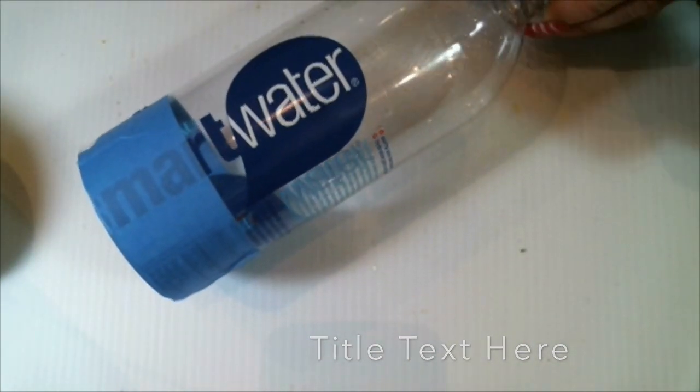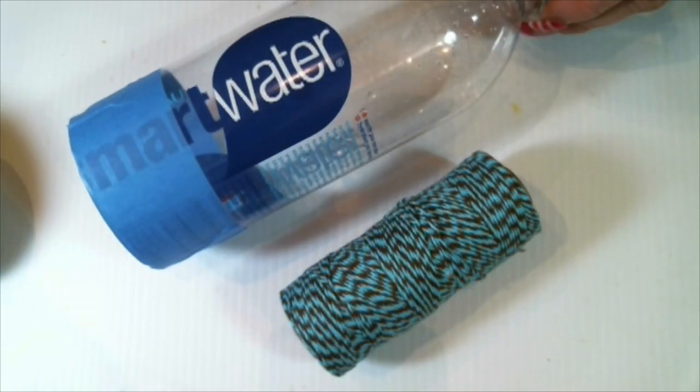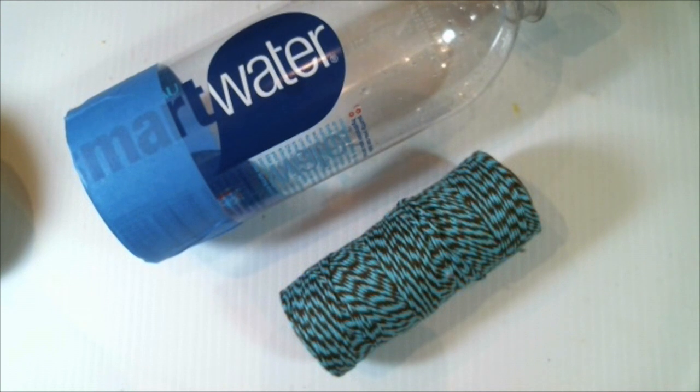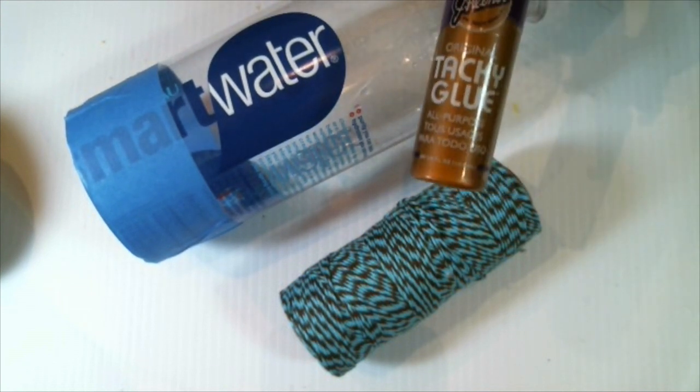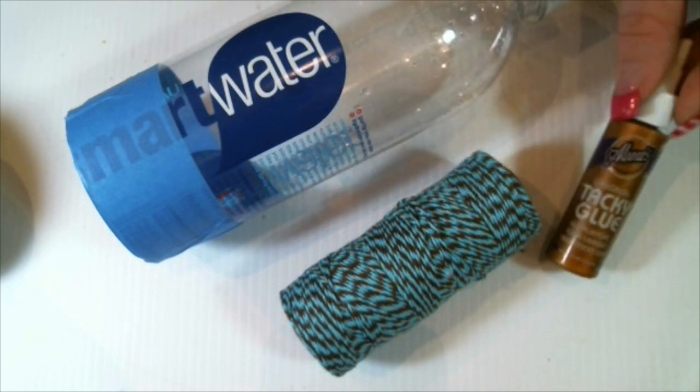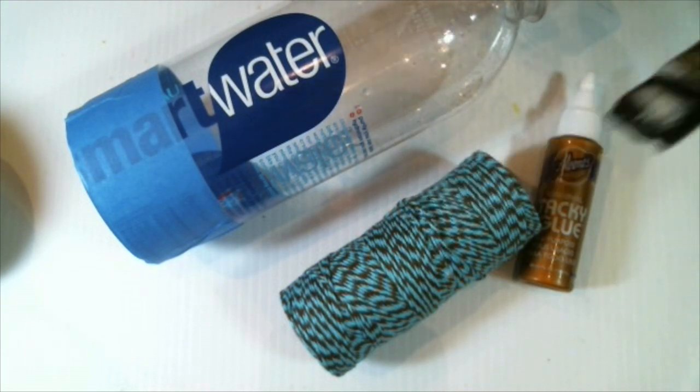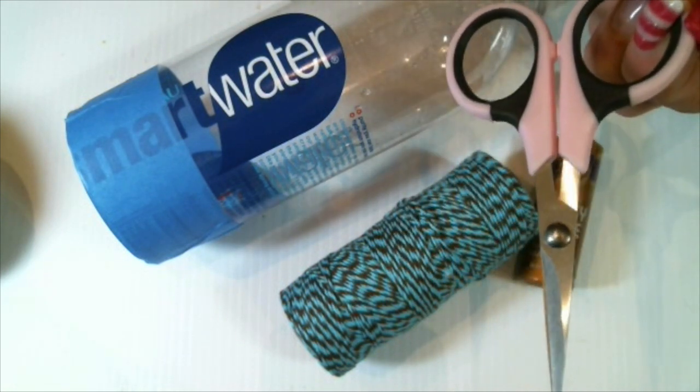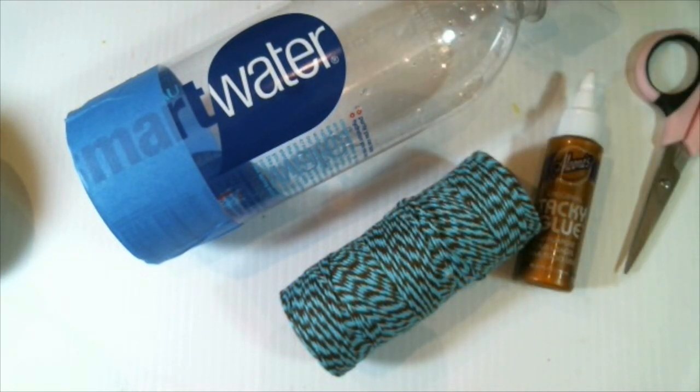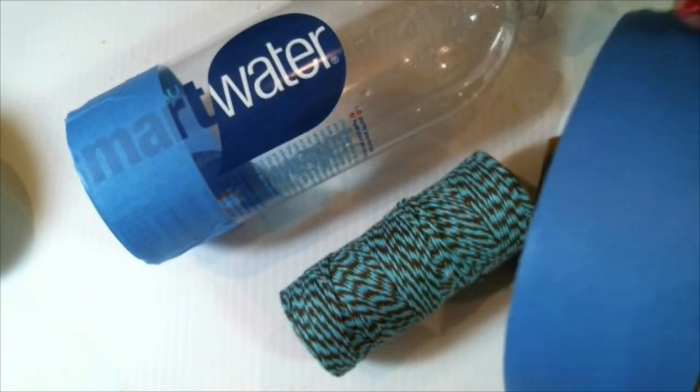The supplies that you are going to need to make this bangle bracelet are a water bottle, some fabulous Timeless Twine, some Aleene's tacky glue, a small paintbrush, some sharp scissors to cut your twine, and some large scissors to cut the bottle.